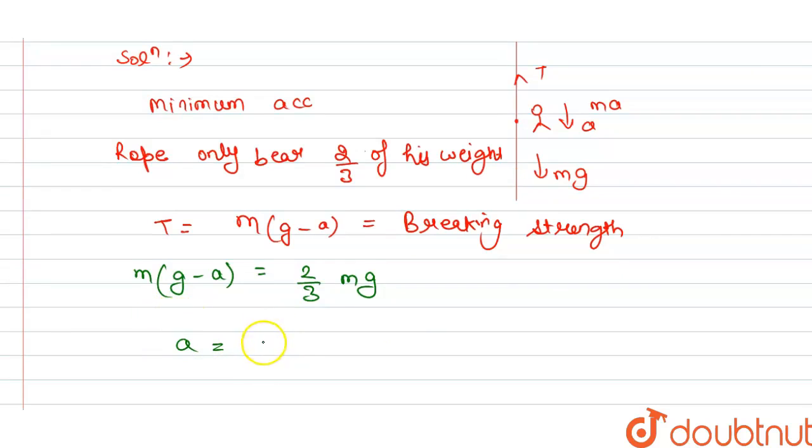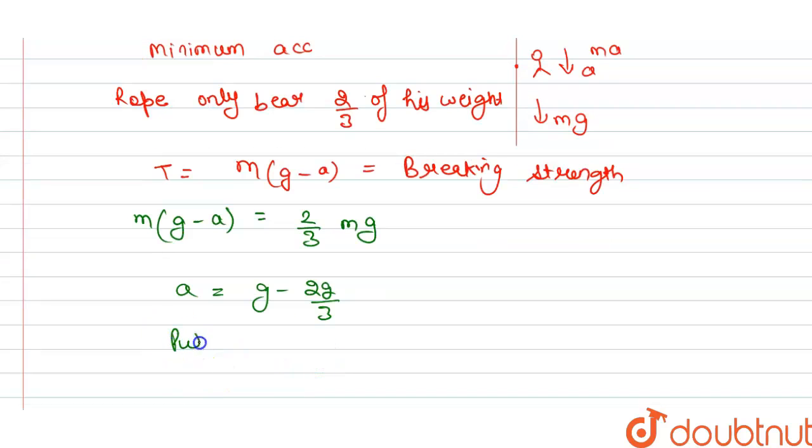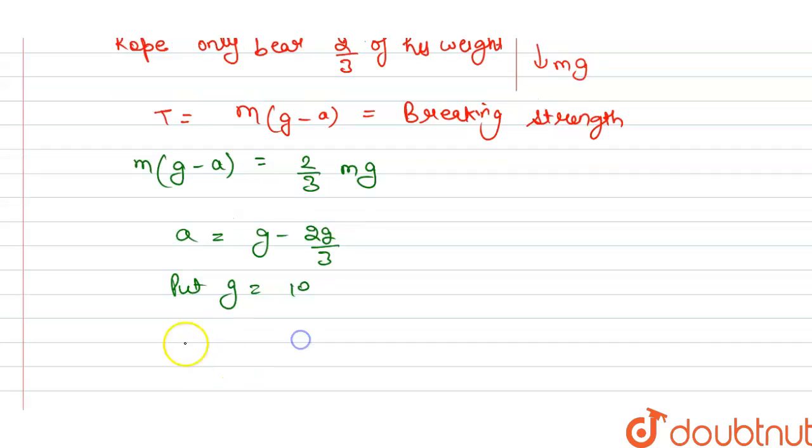If we put g equals to 10, so we get a equals to 10 minus, so this is 30 minus 20 divided by 3, so we get acceleration is 0.33.